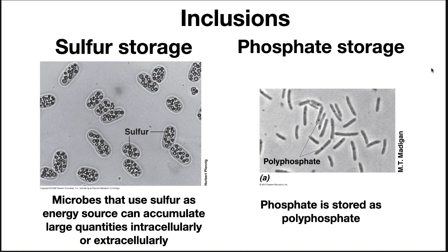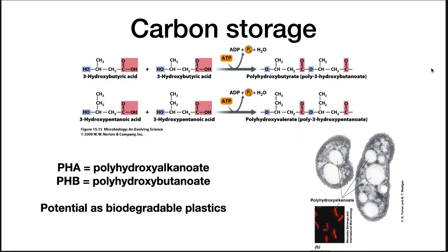Some green bacteria will store sulfur in globules to be used later in their photosynthetic metabolism. Many organisms store phosphate, a nutrient that often becomes limiting in the environment. Shown here is polyphosphate as little granules in the cell. Many microorganisms can store a special polymer — polyhydroxyalkanoate, often polyhydroxybutyrate (PHB). When times get tough, they can depolymerize this PHB and use it as a source of carbon. PHB also has potential as a source of biodegradable plastics.